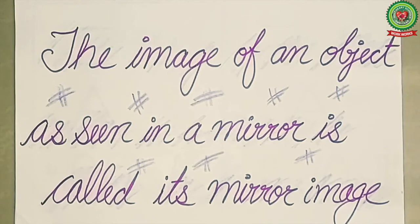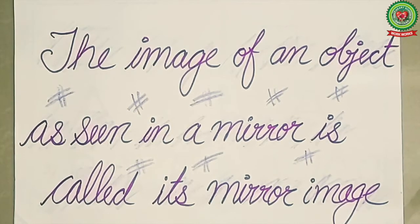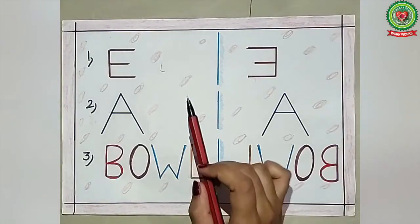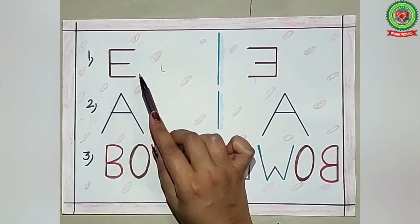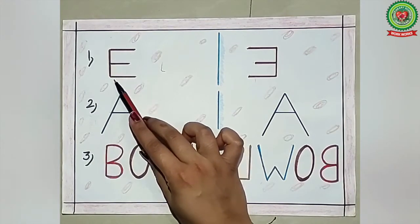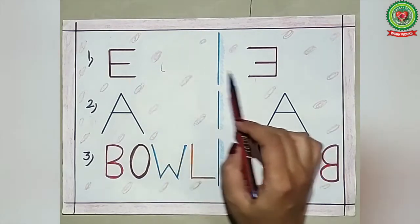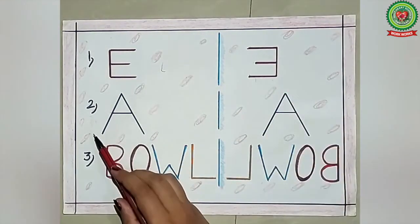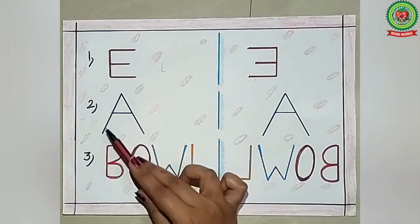In this topic, mirror images turn left into right and right into left. Our first example is E. Right becomes left and left becomes right, so the image of E is this.